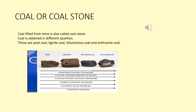Coal lifted from a mine is also called coal stone. There are four types of coal: pit coal, lignite coal, bituminous coal and anthracite coal. Pit coal contains 60% carbon, lignite contains 70% carbon, bituminous coal contains 89% carbon, and anthracite coal contains 94% carbon.